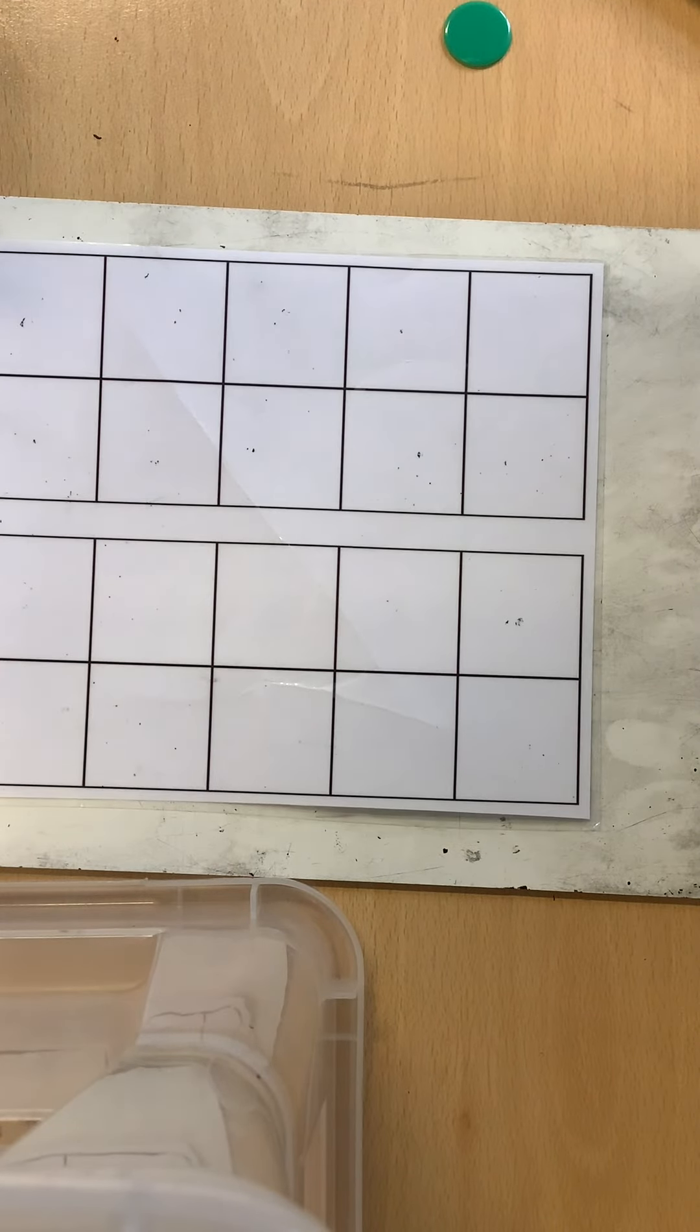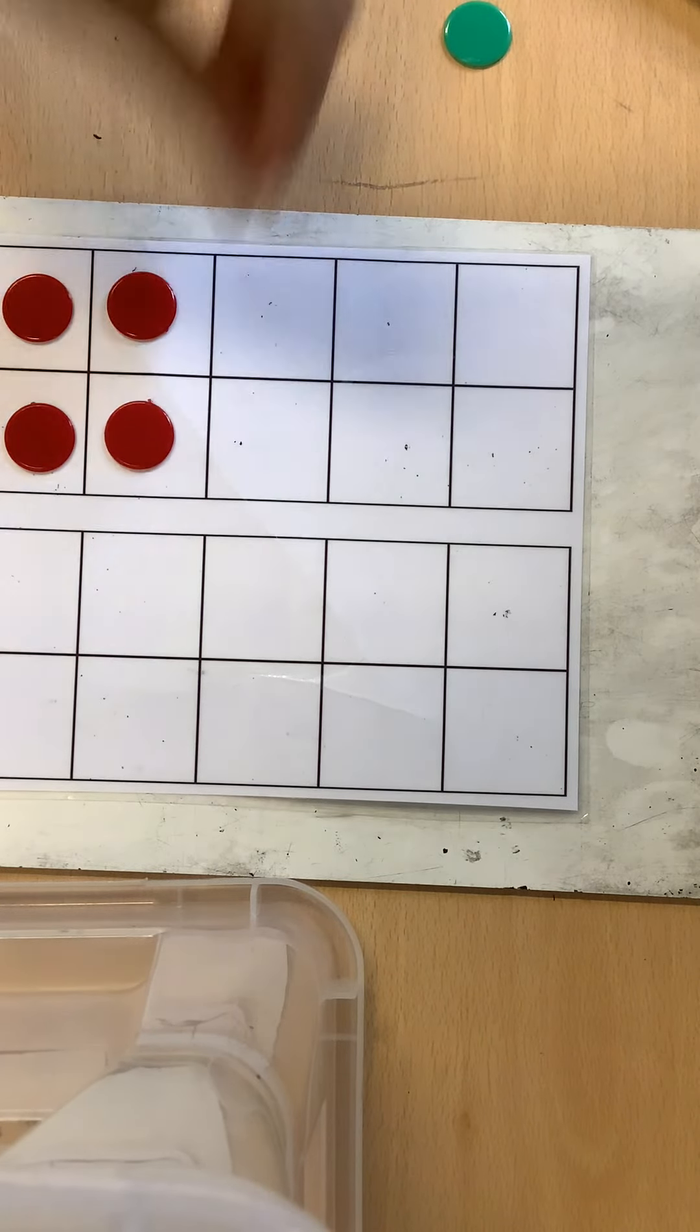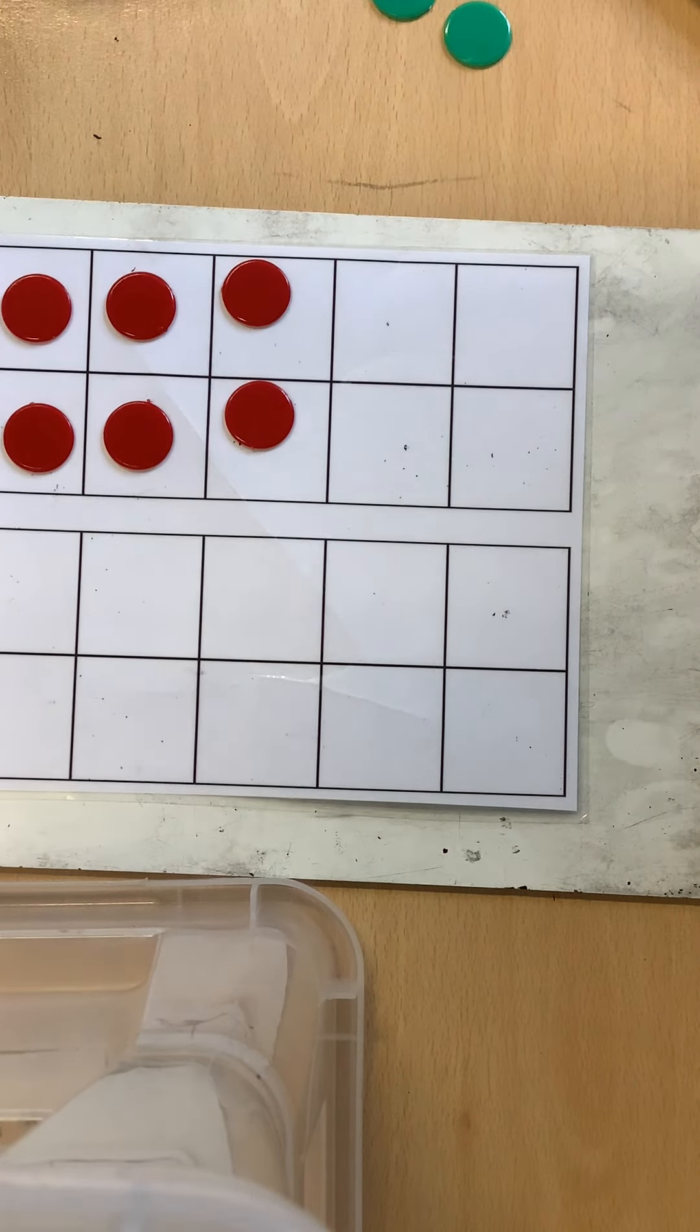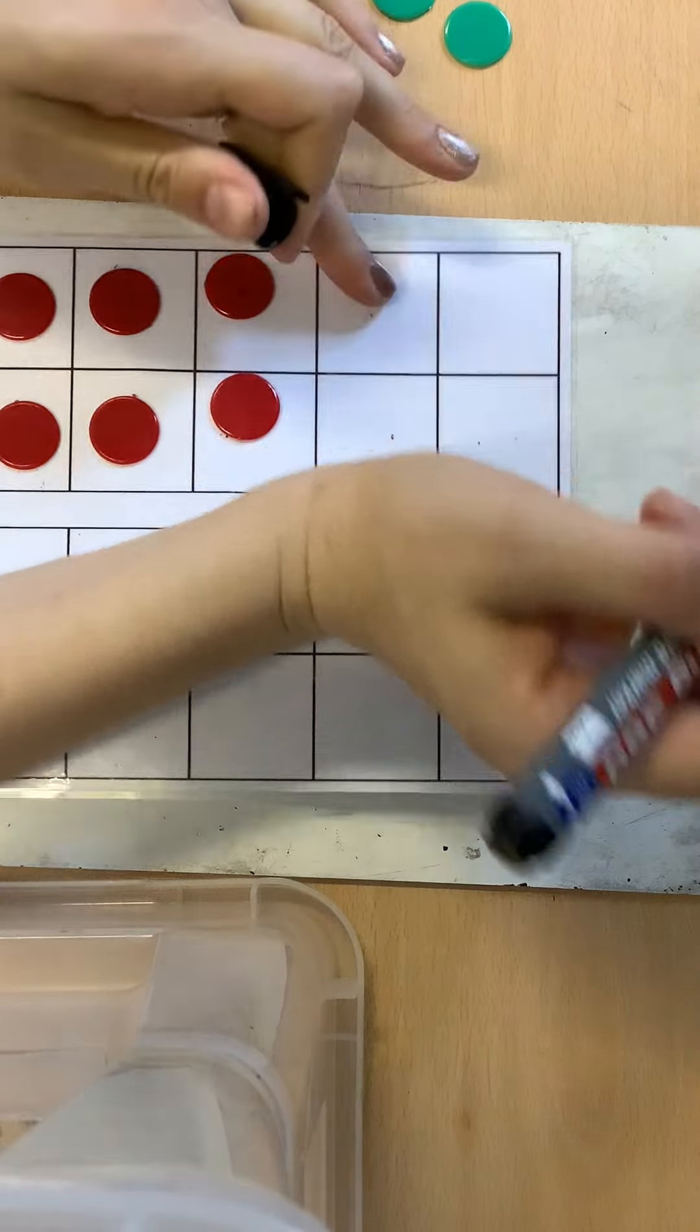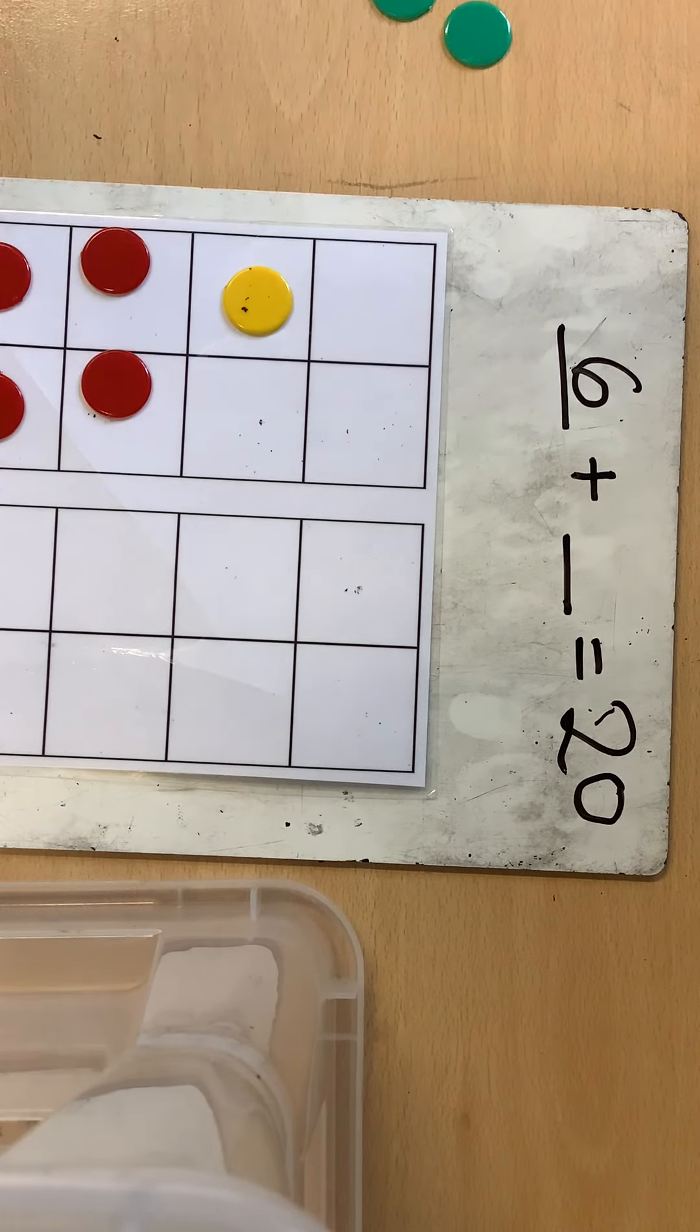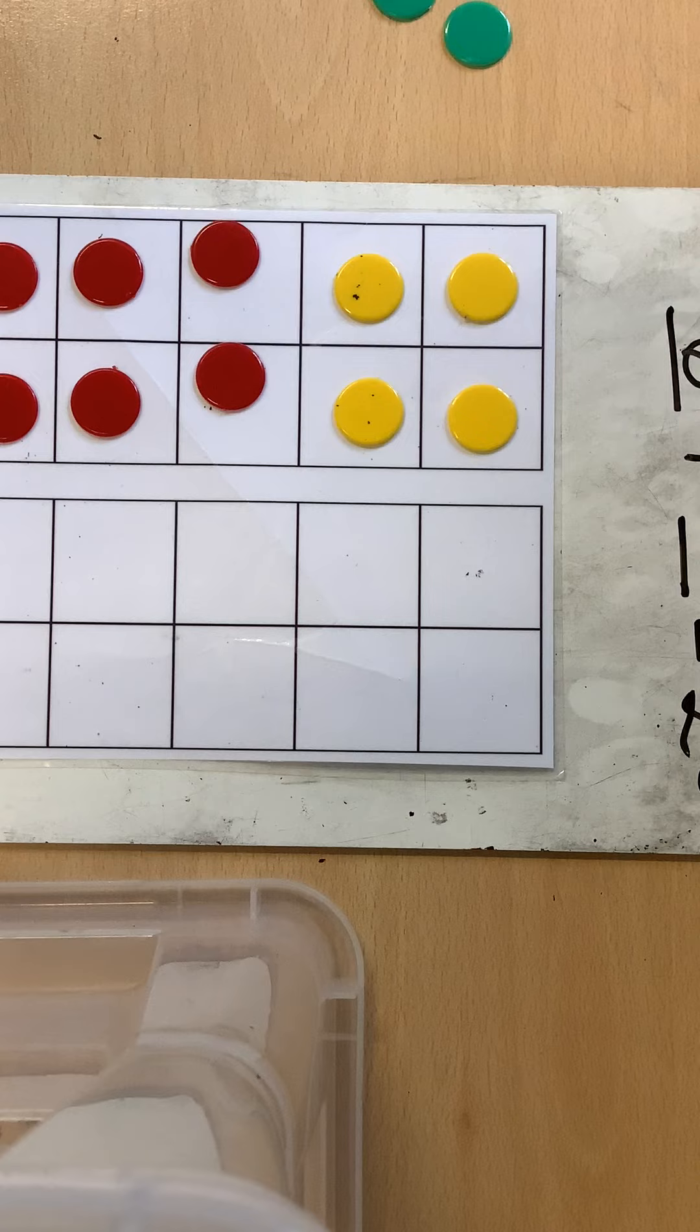So I'm going to start off and I think I'm going to put six here, six red ones, and I'm then going to fill the rest of the two 10 frames up with yellow ones.